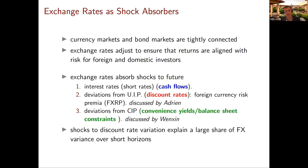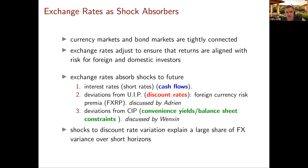What we're going to find is that shocks to discount rates — deviations from uncovered interest rate parity — are actually responsible for a large share of variation in exchange rates. If you want to understand exchange rate variation, these shocks to discount rates are going to be particularly important. This is something we've only really studied carefully in the past few decades, which represents a sea change relative to the work that came before.